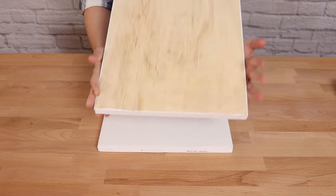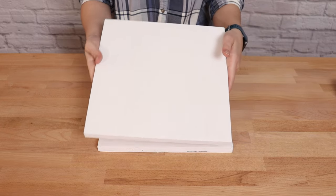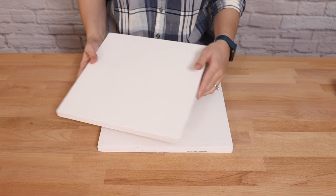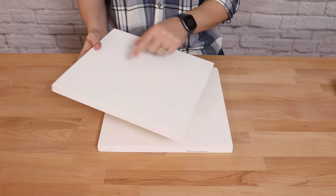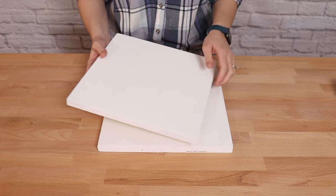I cut these to size using a circular saw, but you can always ask your hardware store and see if they'll cut it to size for you. Once I had my two squares cut out, I then primed them with white paint on the top and the sides so they had a nice clean look.